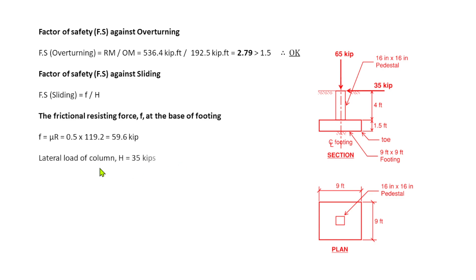The lateral load or the frictional force is 35 kips. We have that already. So we will just divide that one. Factor of safety against sliding is F over H, so 59.6 kips divided by 35 kips, and that would give us 1.7, which is greater than 1.5. So we are okay for the sliding factor of safety.